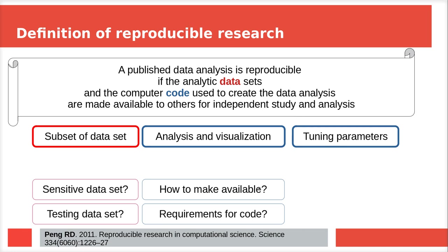There are several ways to make code available. You can paste it in supplementary material, which is better but has no guarantee it will work or that it matches the article. You can post it on GitHub, or supply it in a runnable singularity container, which I'll come back to. Also, whatever form the code is published in, are there any requirements for it? Should we review that code? These are things I felt were missing from the paper. Roger focused on the primary things, and that's fine, but I would have enjoyed to see more of this.